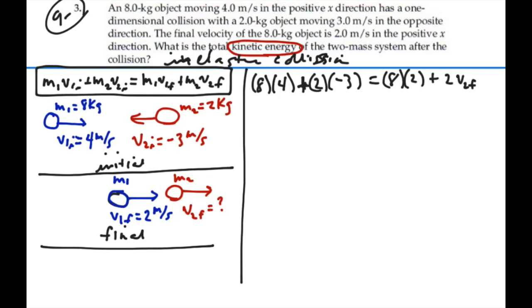This is 32 minus 6 equals 16 plus 2 times V2 final. So V2 final is going to equal 32 minus 6 minus 16 divided by 2, which will be 10 divided by 2, or 5 meters per second.